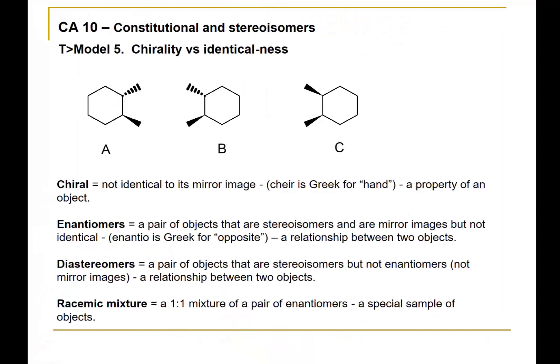In this part of the activity, I'd like to get a little more specific about the definitions. Here for the first time we introduce the term chiral. The term chiral refers to a property of an object — we might say that molecule A is chiral, meaning it's not identical to its mirror image.